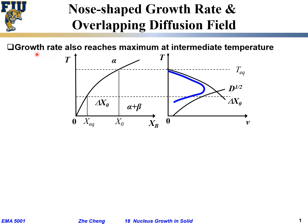What people find is the growth rate, similar to nucleation rate, the velocity of that interface motion, if it's diffusion controlled, also reaches maximum at an intermediate temperature. The blue one, intermediate temperature.